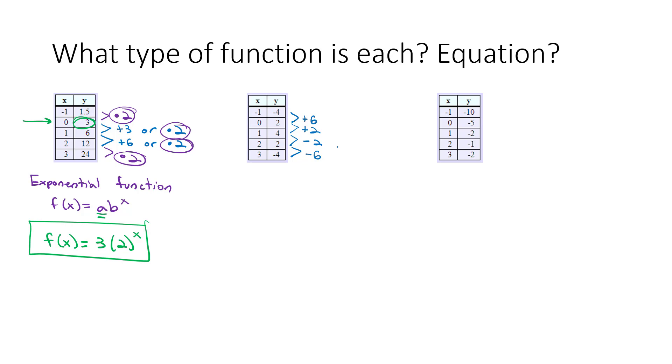This graph started going up, getting bigger, bigger, bigger. Then it leveled off and changed direction. What type of graph is that? Well, if the values go up and then come back down, or the reverse, go down and come back up, you can bet we're probably dealing with a quadratic function.